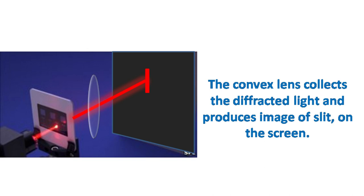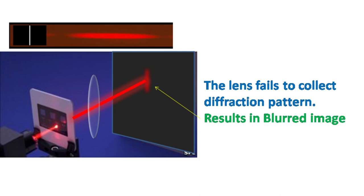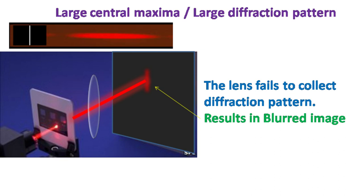Now here's the thing: if the width of the slit is very small, then the diffraction pattern will be huge. Look at the size of the central maxima over here. In this case, the lens fails to collect the diffraction pattern. If the lens fails to collect the diffraction pattern, the image obtained is blurred.